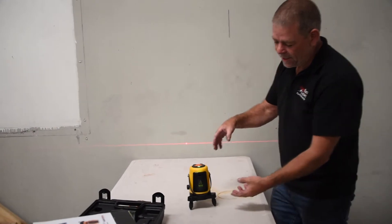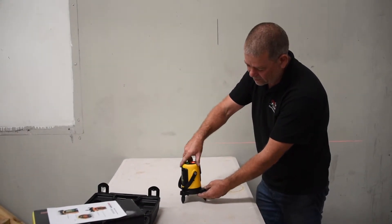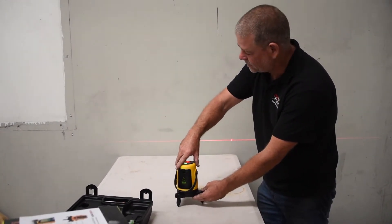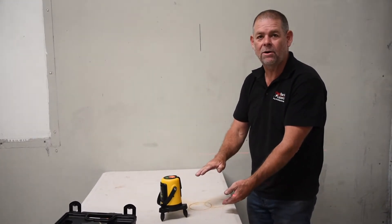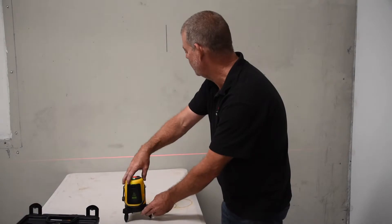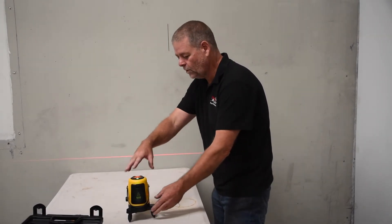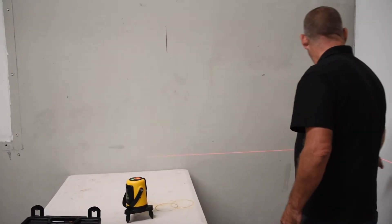The other thing to look at is that it's on a rotation base where we can actually manually rotate that laser around. And when we do rotate it around, it doesn't change in height, so we can actually transfer heights from over on this wall to over here.